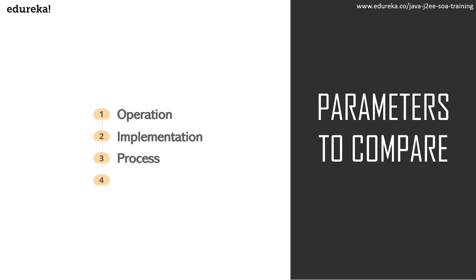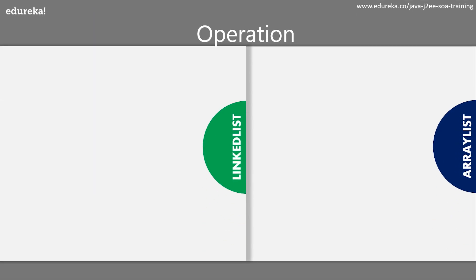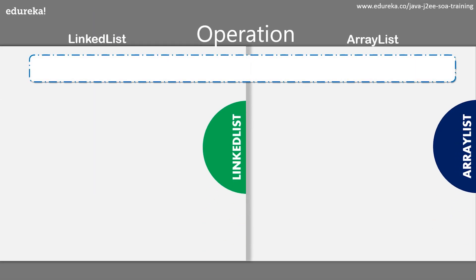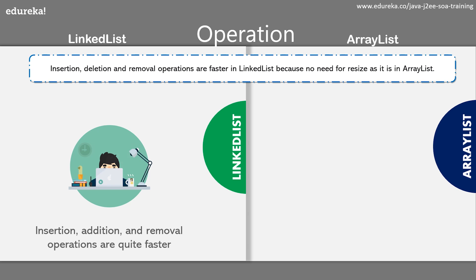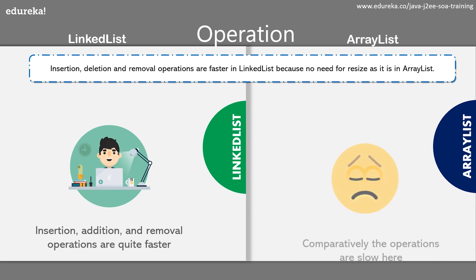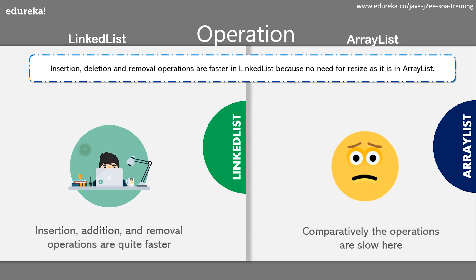Now let's talk about the major differences between linked list and ArrayList. The insertion, addition, and removal operations of any item are faster in a linked list because you don't need to resize as you do in an ArrayList. In ArrayList, these operations are quite slow when compared to linked list.